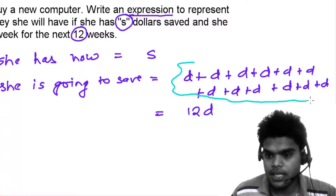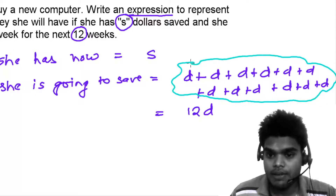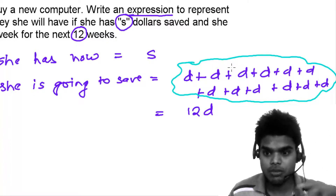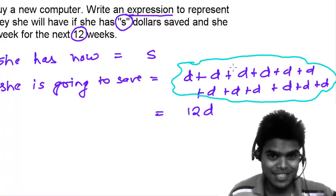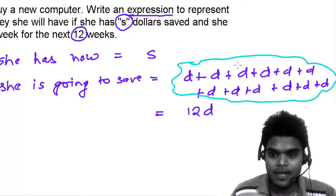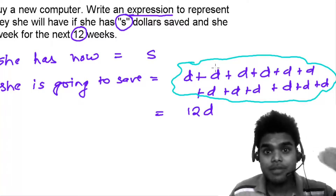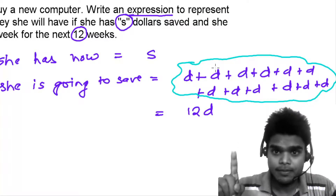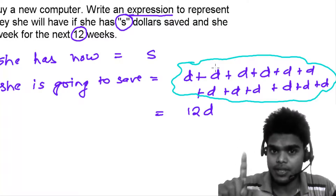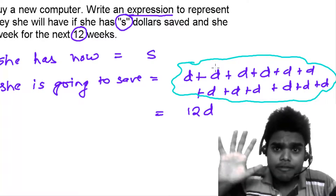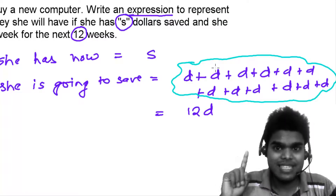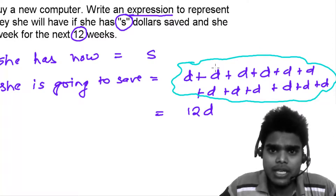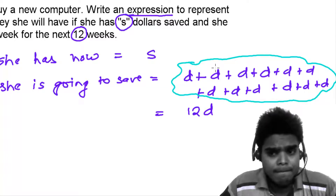What I did here — writing one D for every week one by one — we're not going to do in further problems, because this is a lazy process. This is the first time I showed you; next time we'll just multiply directly: 12D. It's like, if in one day you eat one burger, then in five days you eat five burgers. So if in one week you save D dollars, then in 12 weeks you'll save 12D dollars. Simple.